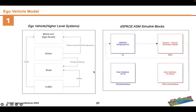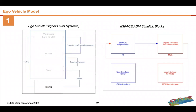This right here is the DSpace ASM traffic model. We had to edit this model so that it could take input from SUMO, but also so that we could extract the ego vehicle information from DSpace. We had to edit the traffic block in order to accomplish that.